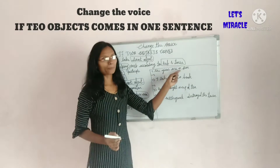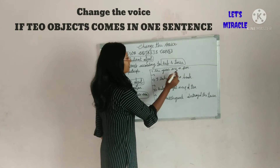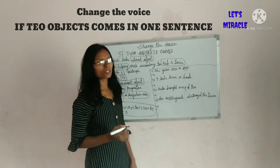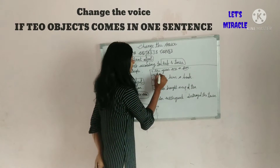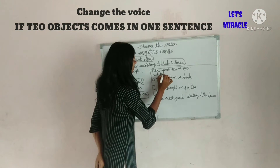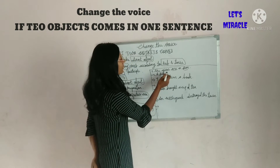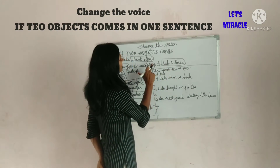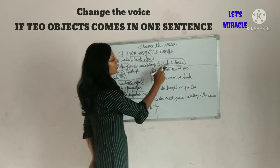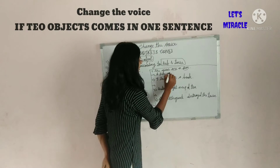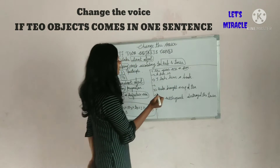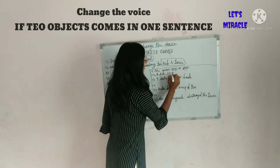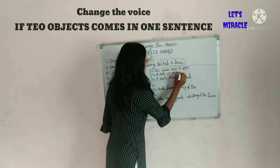She gives me a pen. Here we see 'me' and 'a pen' — there are two objects in the sentence. First we take the direct object: a pen. This is simple present tense, so we take the helping verb according to subject and tense.